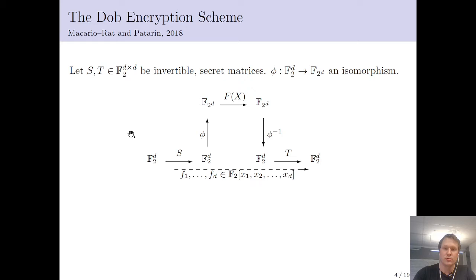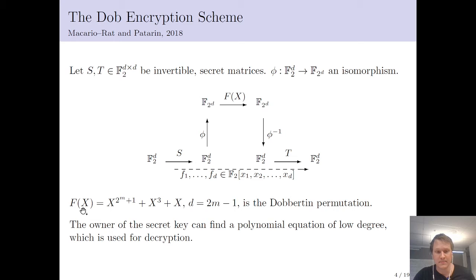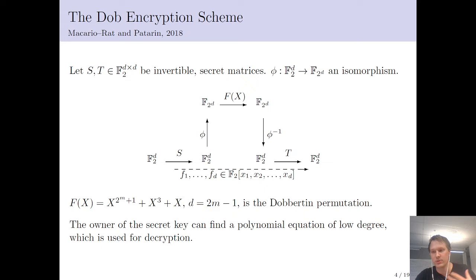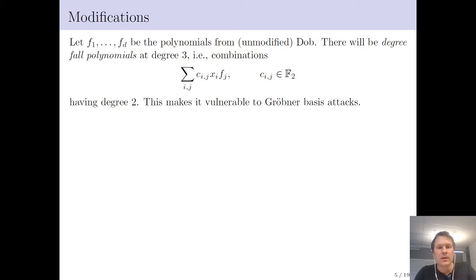The idea for Macario-Ra and Patera was to choose the double-thin permutation for f. You may note that this polynomial in and of itself will have a high degree. But the authors show that given the ciphertext, you are able to find a polynomial equation with low degree, which you can use for decryption, where it's easy to find roots. So all maps in this construction are invertible and inverting piecewise is how you decrypt. Now if you use this as-is as a public key, it would be insecure, because when choosing f like this there are degree-fall polynomials at degree three.